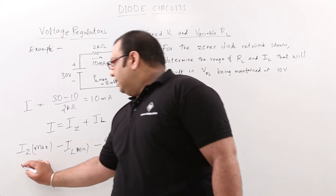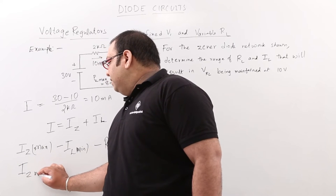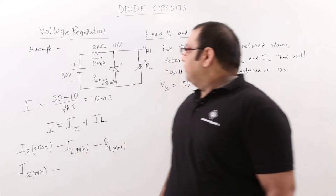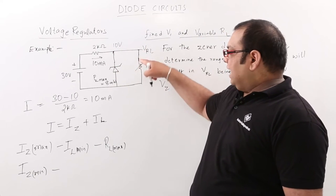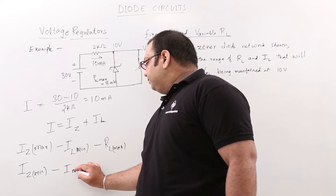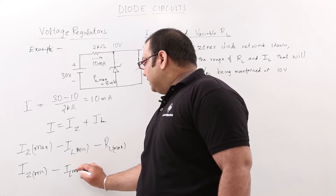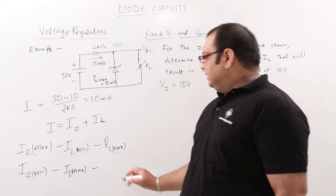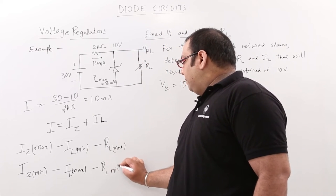Similarly, when IZ is minimum, IL is maximum — maximum current enters the load resistance. When IL is maximum, RL is minimum.